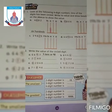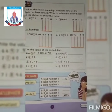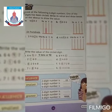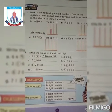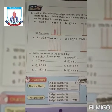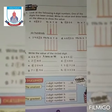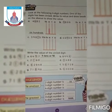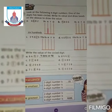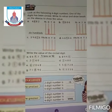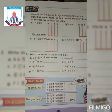Assalamualaikum students, hope you all are fine. Class 3, take out your maths book and open page number 13. Students, question number 1 and 2 - solve question 1. Look at the following four digit numbers, one of the digits has been circled. Write its value and draw beads on the abacus to show the value.